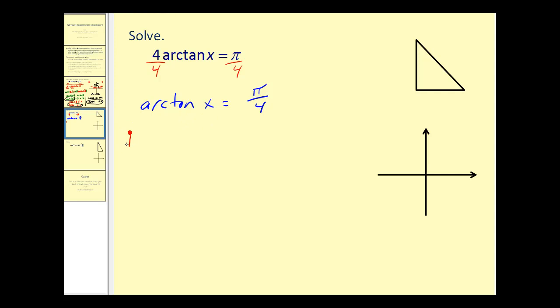Now if we take the tangent of both sides we can isolate the x. And if we take the tangent of the arctan x we'll be left with x. Remember this returns an angle that has a tangent function value of x, then we want the tangent of that angle, so it would just give us x.